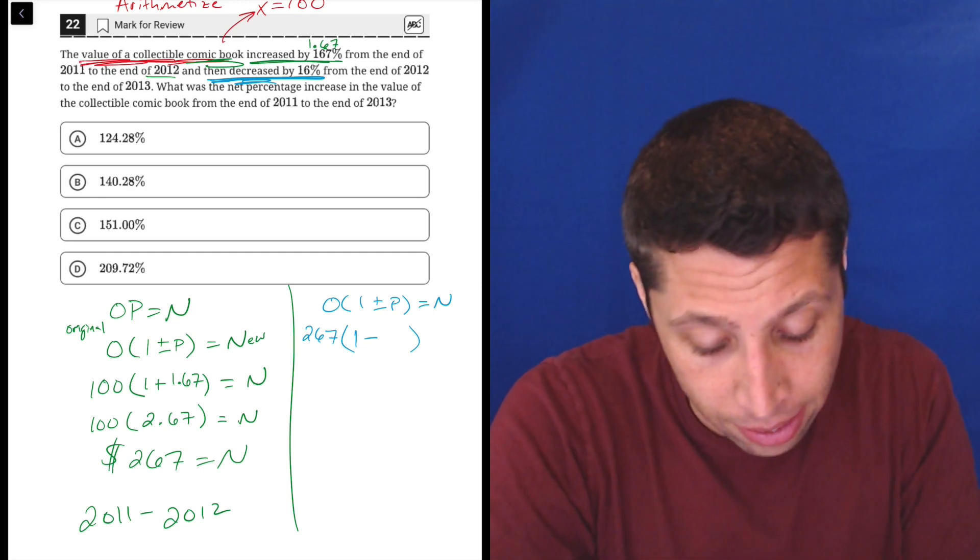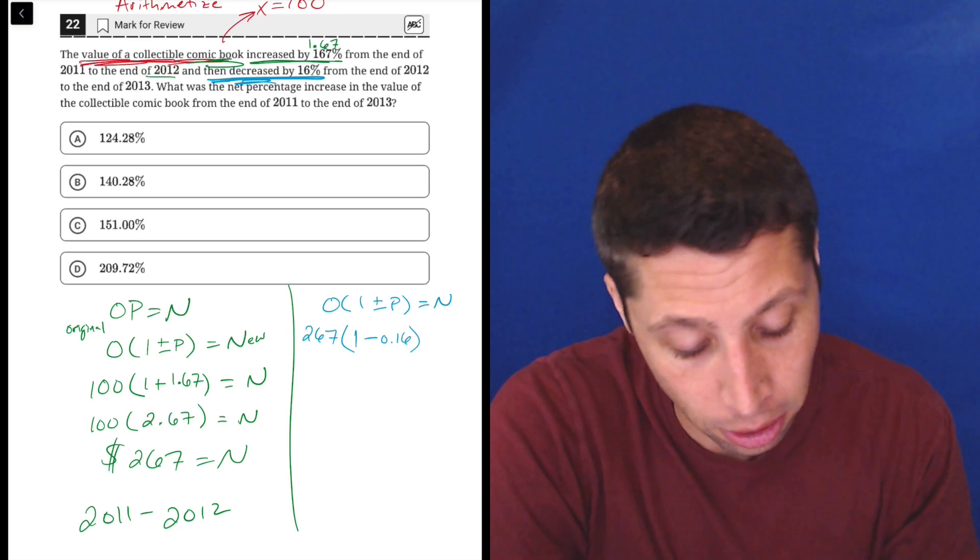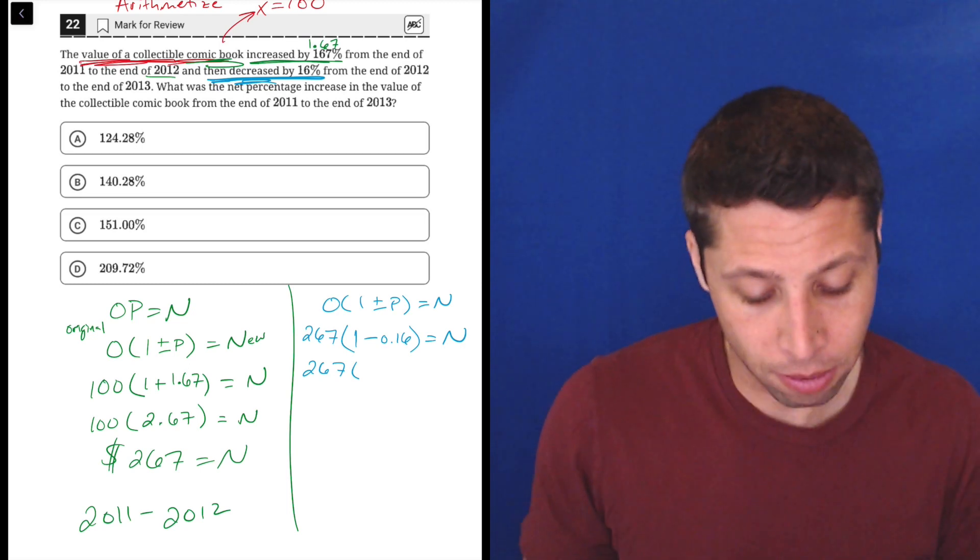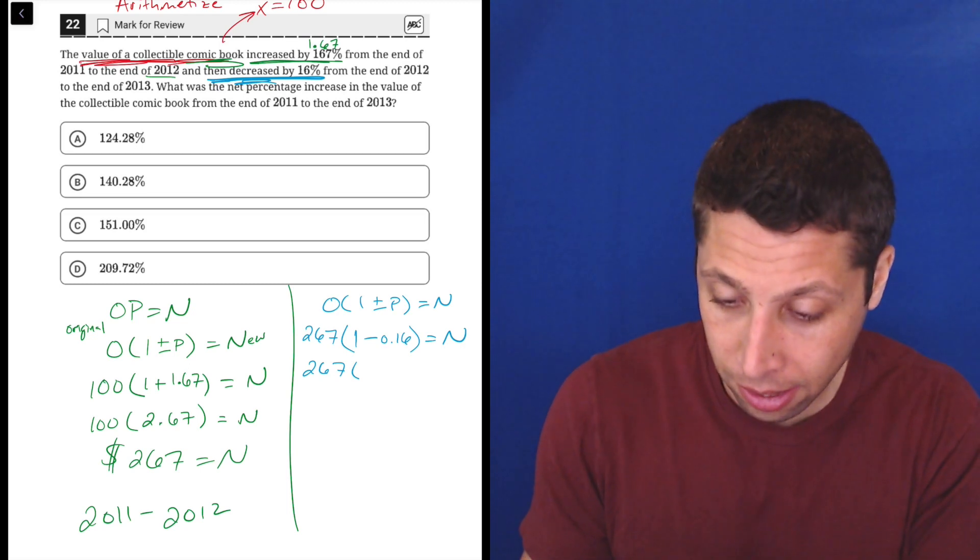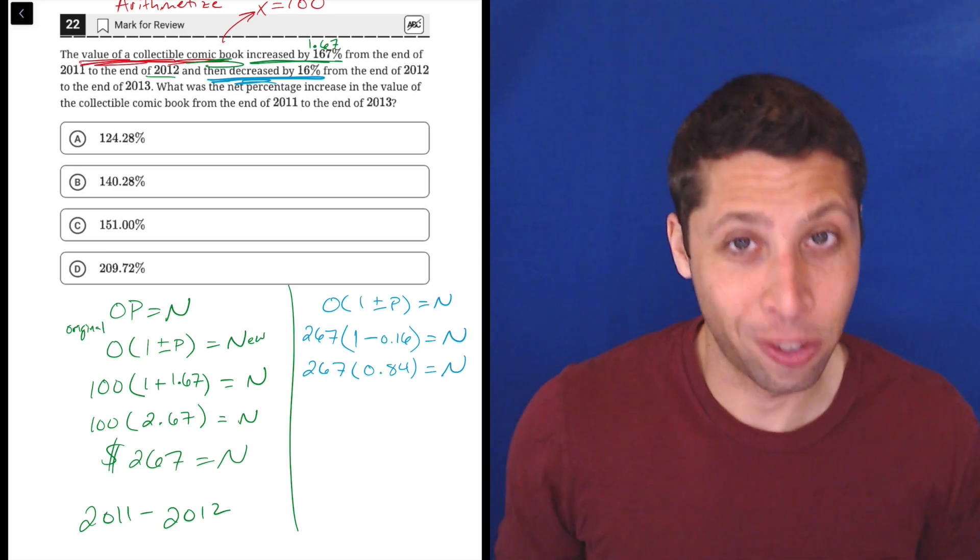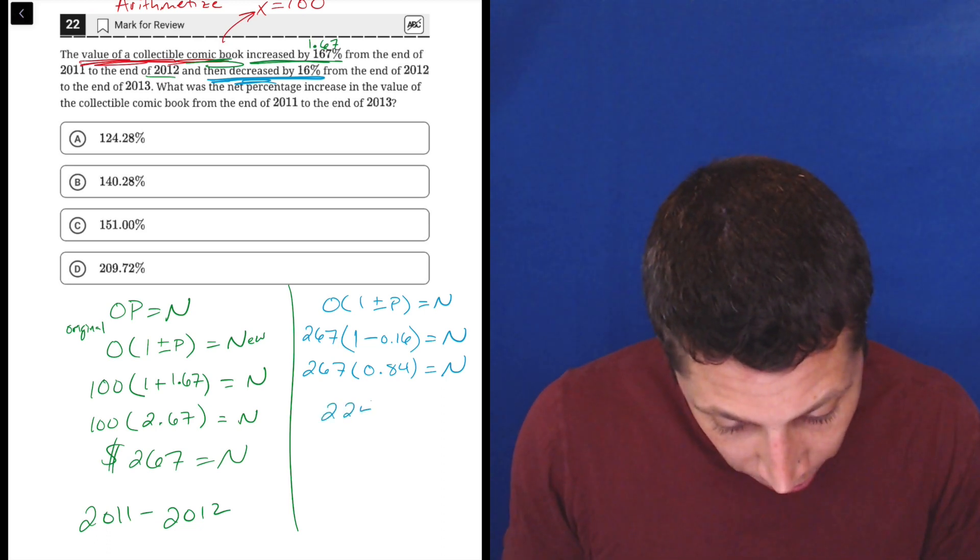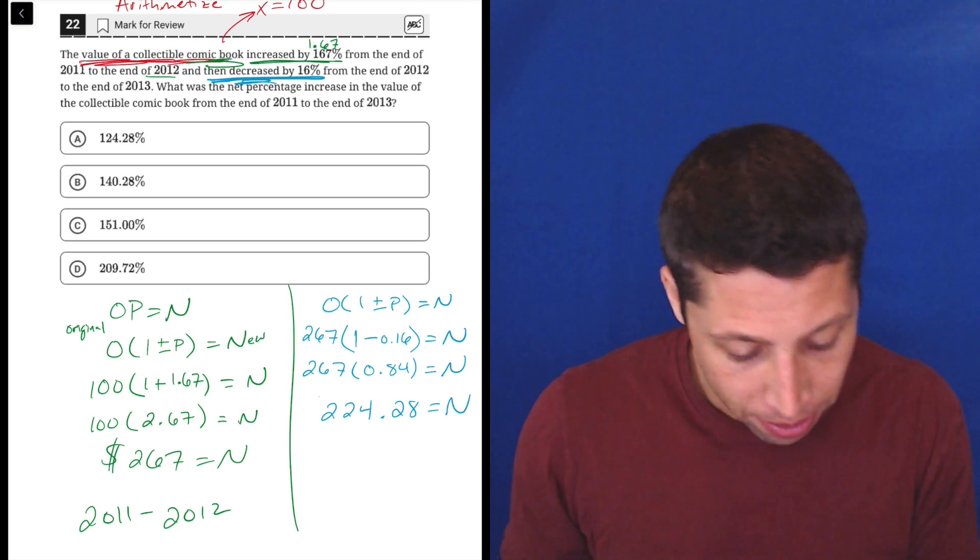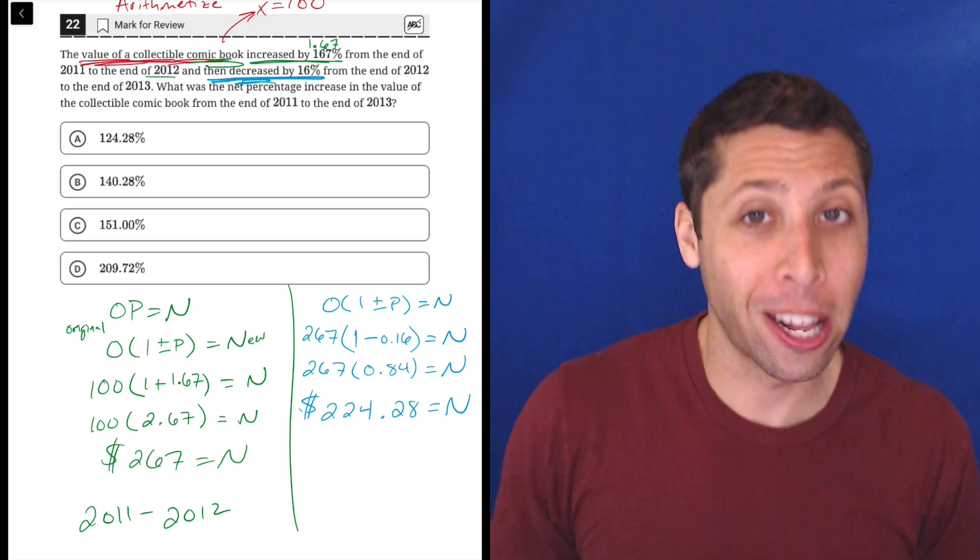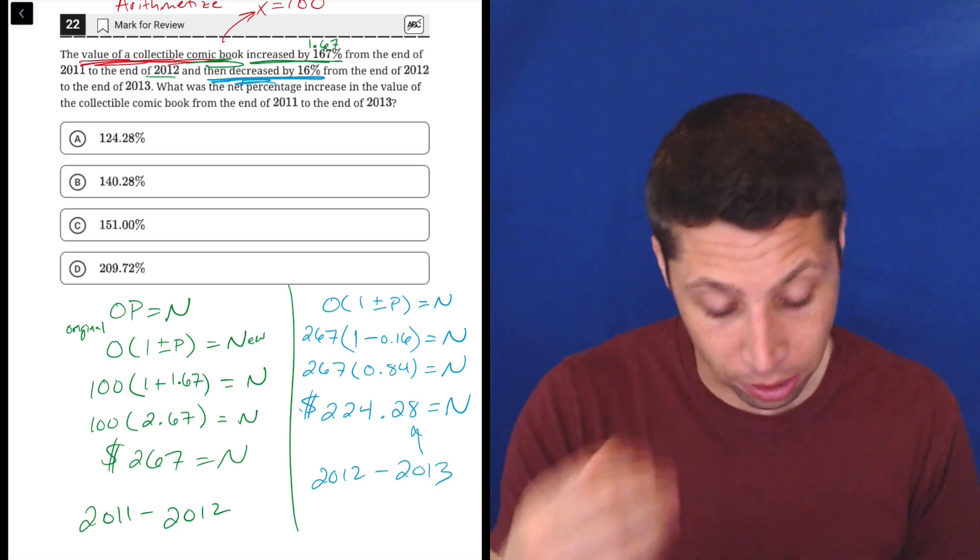And then 16% is, as a decimal, 0.16, right? Remember, we're moving that decimal place two spots to turn it into a decimal. And this is going to give us the newest value. So again, we just have some work to do with our numbers. So 1 minus 0.16, 1 minus 0.16 is 0.84. So this is the kind of stuff that I wouldn't try to do in my head. It's way too complicated. So using my calculator, 267 times 0.84 is 224.28. That's the new cost of this comic book, right? So we made it up that this comic book cost $100 to start. But now at the end of 2013, it has this new price, $224.28.